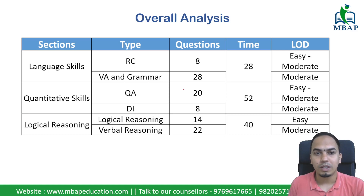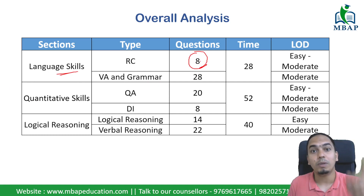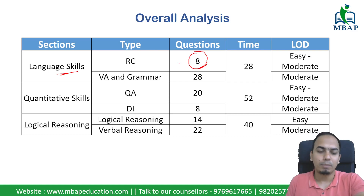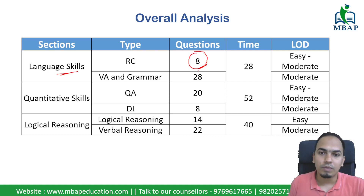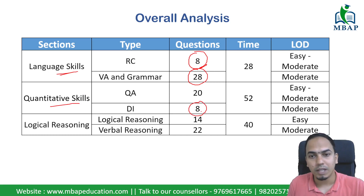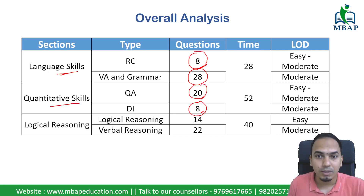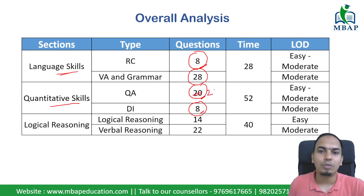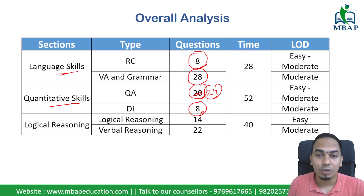In the language skills section, RC now has 8 questions instead of the usual 12 — they've reduced it from 3 RCs to 2 RCs. This is somewhat similar to what SNAP did by removing RC. Verbal grammar and other areas will obviously increase to compensate. Data interpretation, which normally had 12 questions, now has 8 questions, but the overall questions in that area have gone up to around 24-26 questions.